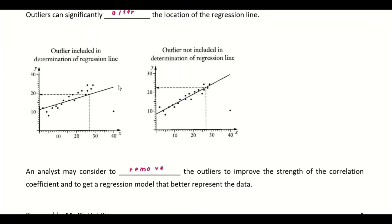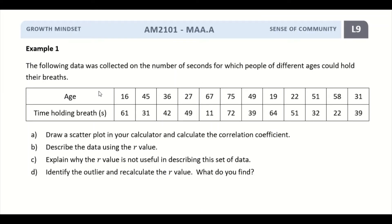Let's look at Example 1. The following data was collected on the number of seconds for which people of different ages could hold their breath. We have their age with the respective time they can hold their breath. Draw a scatter plot in your calculator and calculate the correlation coefficient. Have your TI-Nspire beside you, key in all your data, construct a scatter plot, and get your value for R. I'm going to fast forward this process.